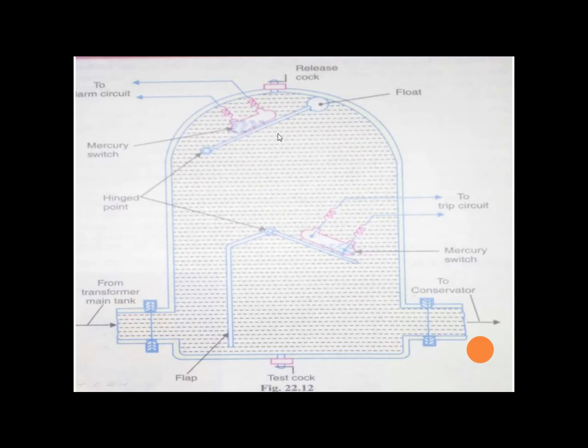As the gases accumulate and the oil level drops, the contacts are closed. As the contacts are closed, the alarm will be connected. Because the alarm circuit is connected with the transformer, there is a fault in your transformer. This is the basic operating principle of a Buchholz relay.